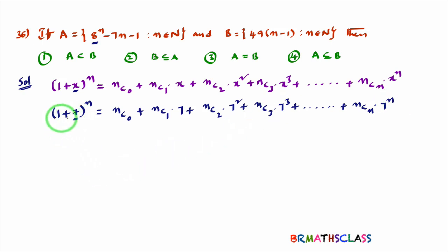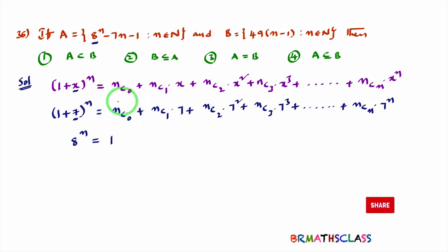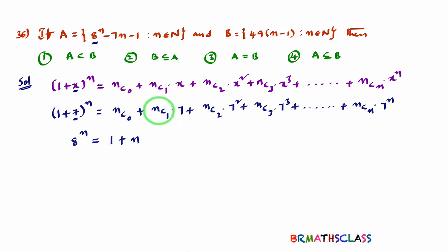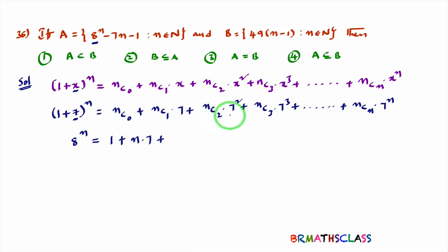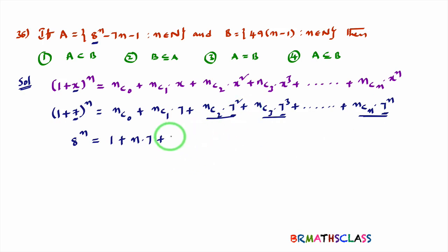The left hand side 1 plus 7 is 8, so this is 8 power n. Now, nc0 by standard formula is 1, and nc1 by standard formula is n. So we have 8 power n equals 1 plus n into 7 plus remaining terms. You observe that in all the remaining terms, 7 square is present, so we can take 7 square as a common factor.